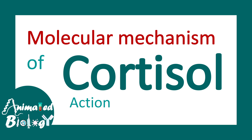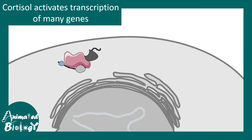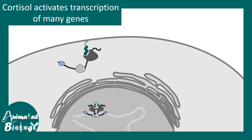Cortisol acts via steroid receptors because it's a steroid hormone — it can easily move through the plasma membrane and bind to intracellular receptors present in the cytoplasm. Generally, these receptors are held by heat shock protein 90 (HSP90). When the ligand binds, the entire complex moves to the nucleus and binds to hormone response elements, triggering secretion of several factors responsible for countering stress and overall glucose metabolism. This is how cortisol works at the molecular level.